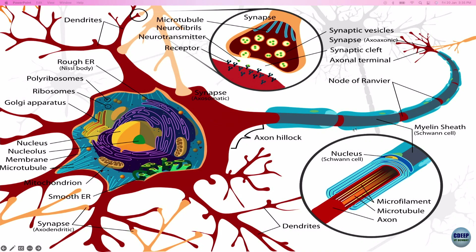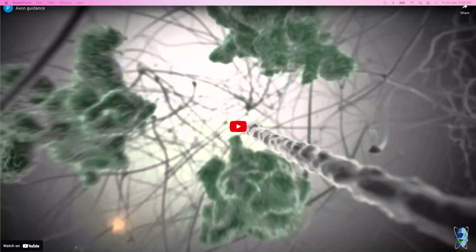Neurotransmitters are transferred from the pre-synapse to the post-synapse and are very important in many of our bodily functions. The human brain is composed of a network of billions of neuronal connections that enable us to move, communicate, and remember. Neuronal formation starts with the birth of neurons and their migration to the brain region where they will function.